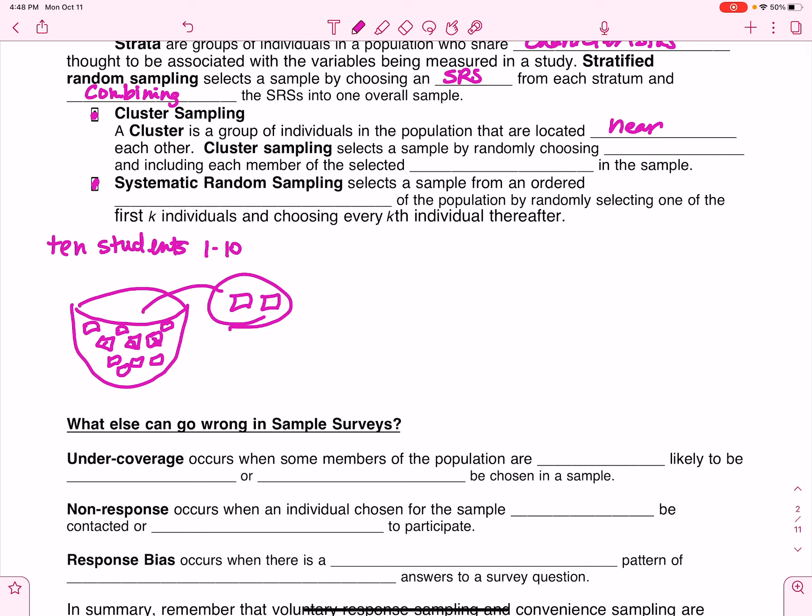It's not about a characteristic. So cluster sampling selects a sample by randomly choosing clusters and including each member of the selected clusters in the sample. And again, I've got an example that shows you what each of these would look like in real life.